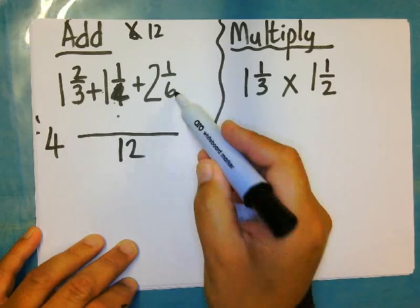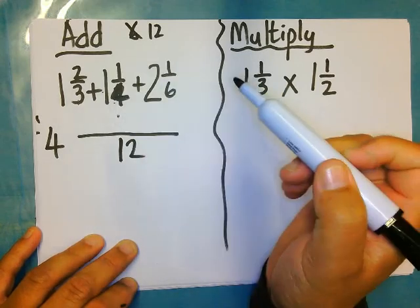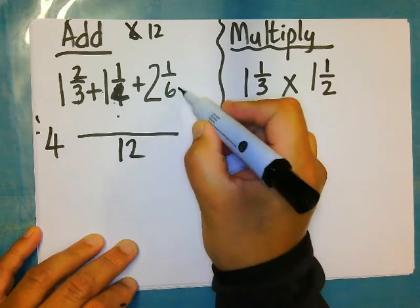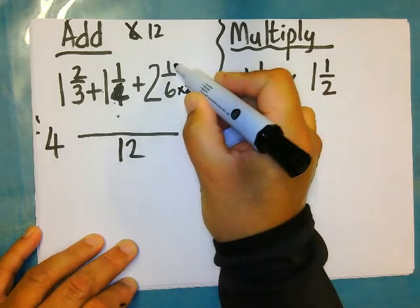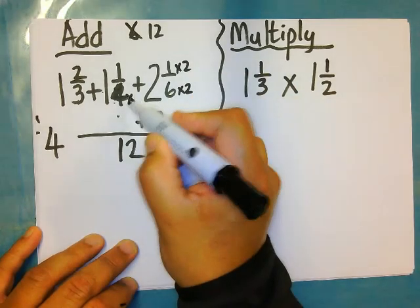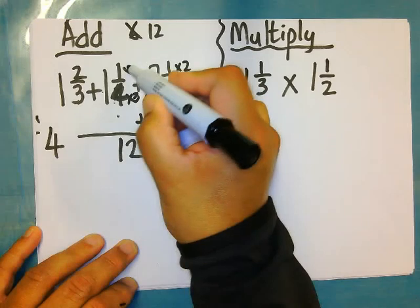So now I must change my numerator. How do I change my numerator? I'm going to start here. Six times two gives me twelve, so I must do the same with the denominator, so that will be two. Plus this one is four times three gives me twelve, so one times three is three.